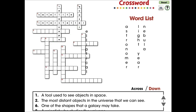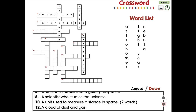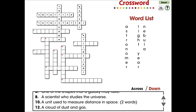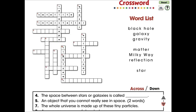Drag a word from the list to its correct position in the puzzle. Use the arrows to scroll through all the clues. Switch between across and down clues and words. Visit ccpinteractive.com for extended versions of our products and to watch more demo videos.